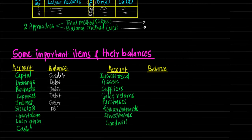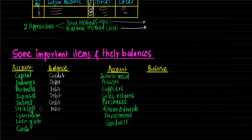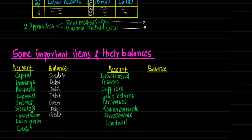Opening stock has a debit balance — 'debit what comes in.' Note that closing stock does not reflect in trial balance because it is an adjustment entry treated differently from opening stock. Loan taken will always have a credit balance because the person who gives the loan is a creditor, and the rule of personal account says 'credit the giver.' Vice versa, loan given will have a debit balance.